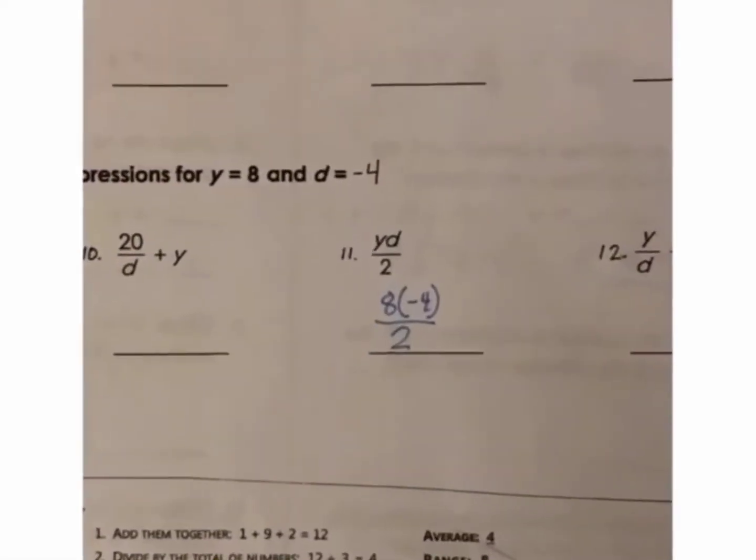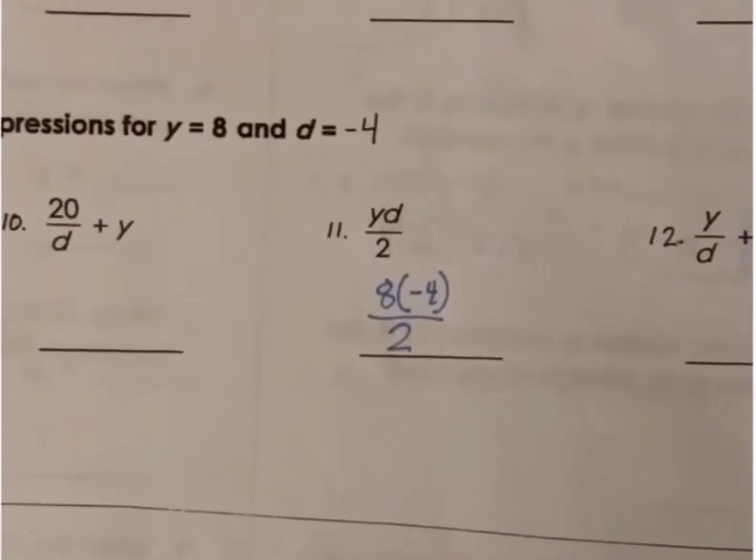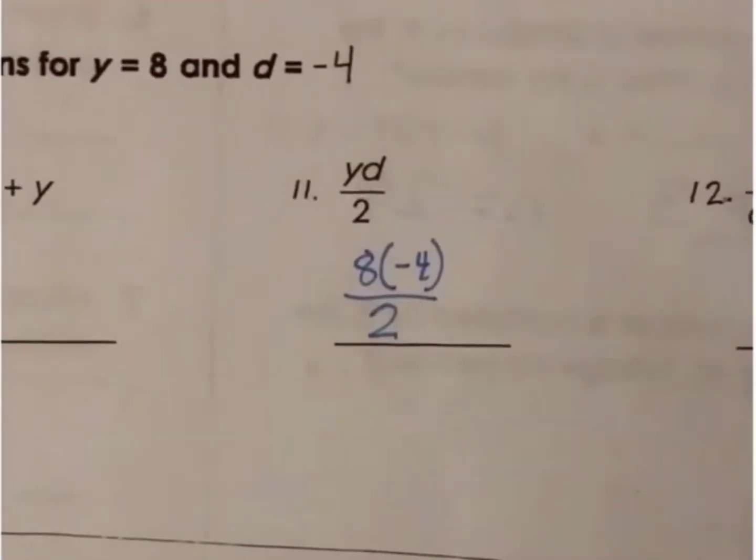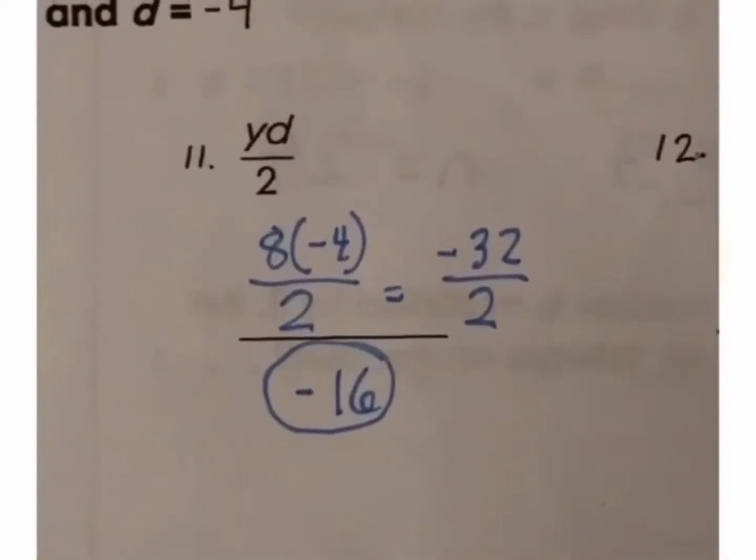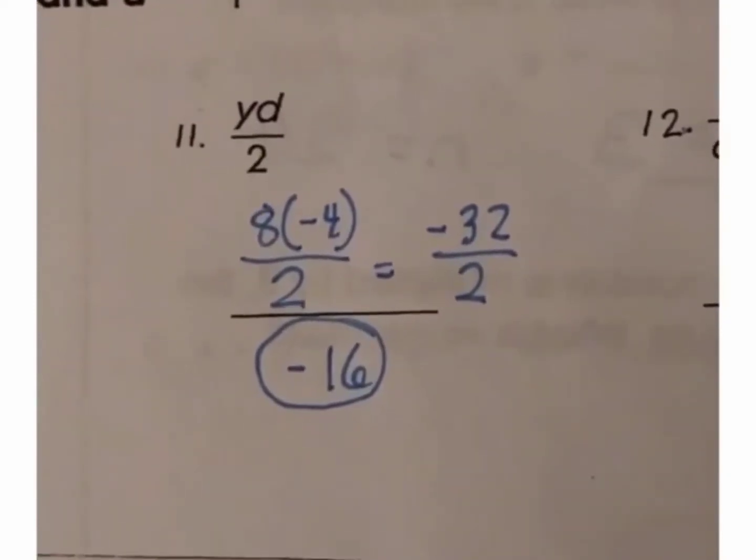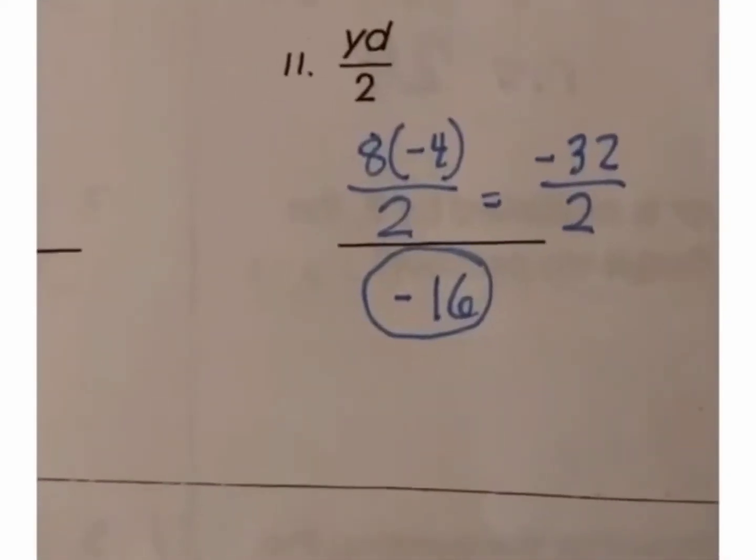Now, look at number 11. I substitute y for 8 and d with negative 4, and then divide those by 2. When I simplify them, I get negative 32 divided by 2, which gives me a quotient of negative 16.